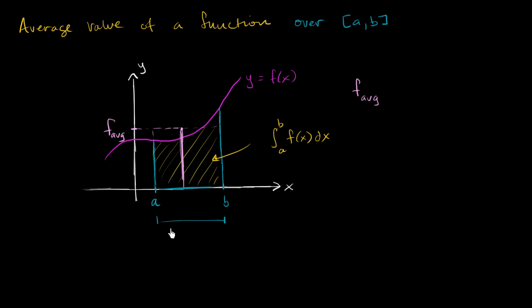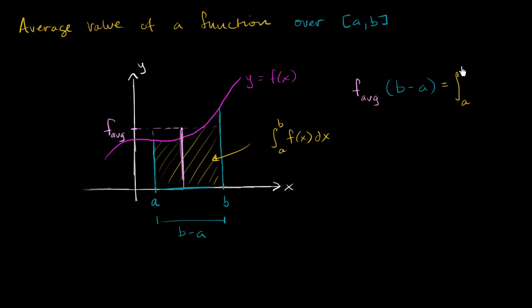— is just going to be the larger value minus the smaller value, so that's b minus a. So the average value of the function times the width of the interval should give us an area equivalent to the area under the curve, so it should be equal to the definite integral from a to b of f of x dx.